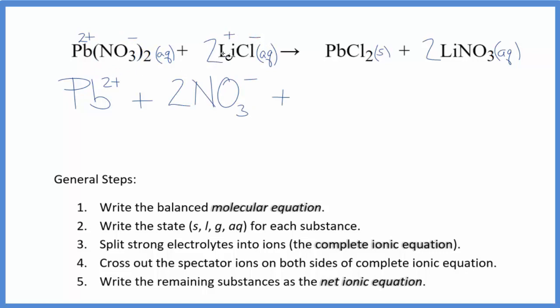The chloride ion, 1 minus. So two lithium ions. And then we have two chloride ions. These are the reactants in our net ionic equation.